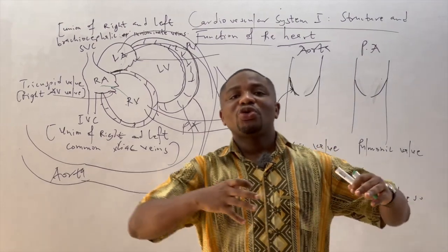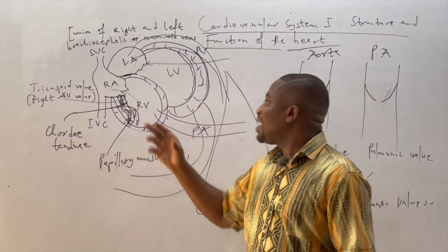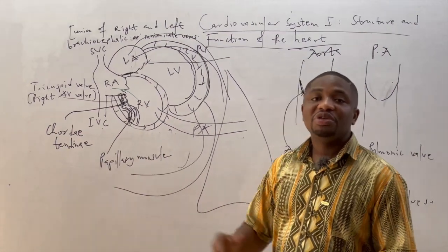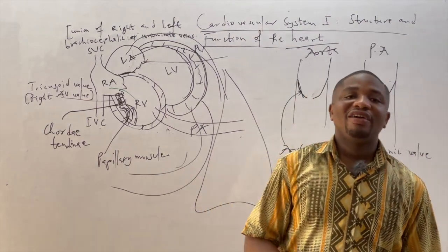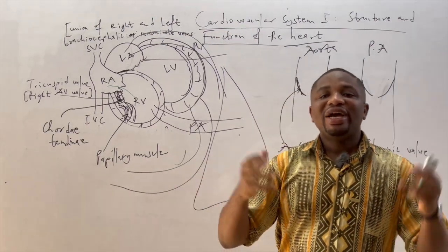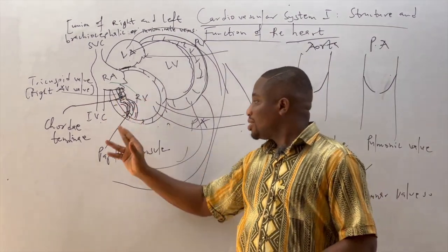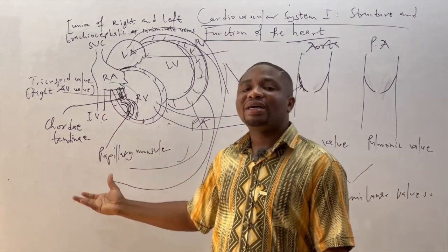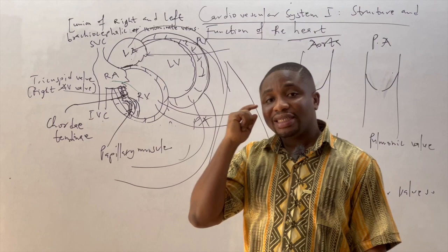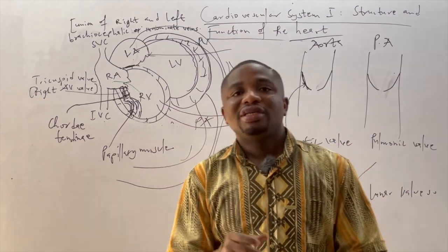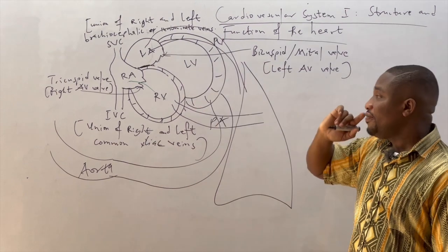To ensure that the mitral valve and the tricuspid valve do not over-expand while maintaining unidirectional flow of blood from the atria to the ventricles, there is a structure that holds them in place called the chordae tendineae. These are fibrous tissues that hold the mitral and tricuspid valves in place. The chordae tendineae are also attached to muscle fibers known as the papillary muscles, which are inserted into the myocardium of the ventricle to anchor the chordae tendineae.